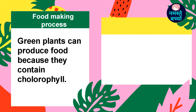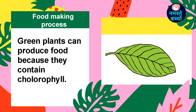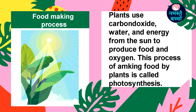Green plants can produce food because they contain chlorophyll. Plants use carbon dioxide, water, and energy from the sun to produce food and oxygen. This process of making food by plants is called photosynthesis.